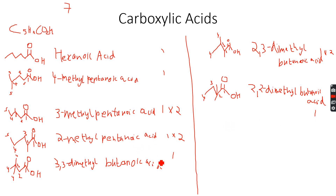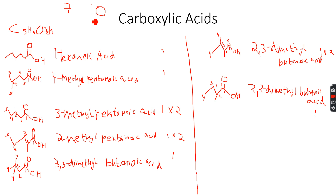When we count the total number of structural and stereoisomers it comes to one, two, three, four, five, six, seven, eight, nine, and ten. So there will be ten total structural plus stereoisomers for this compound. Now we know isomerism in carboxylic acids as well.